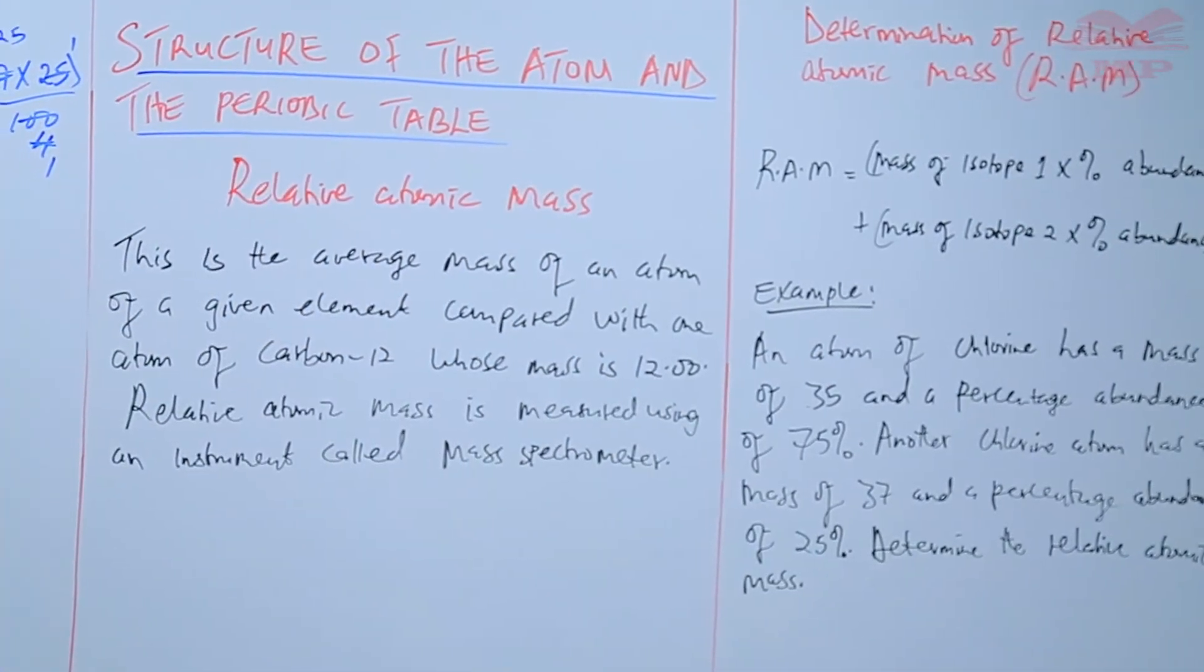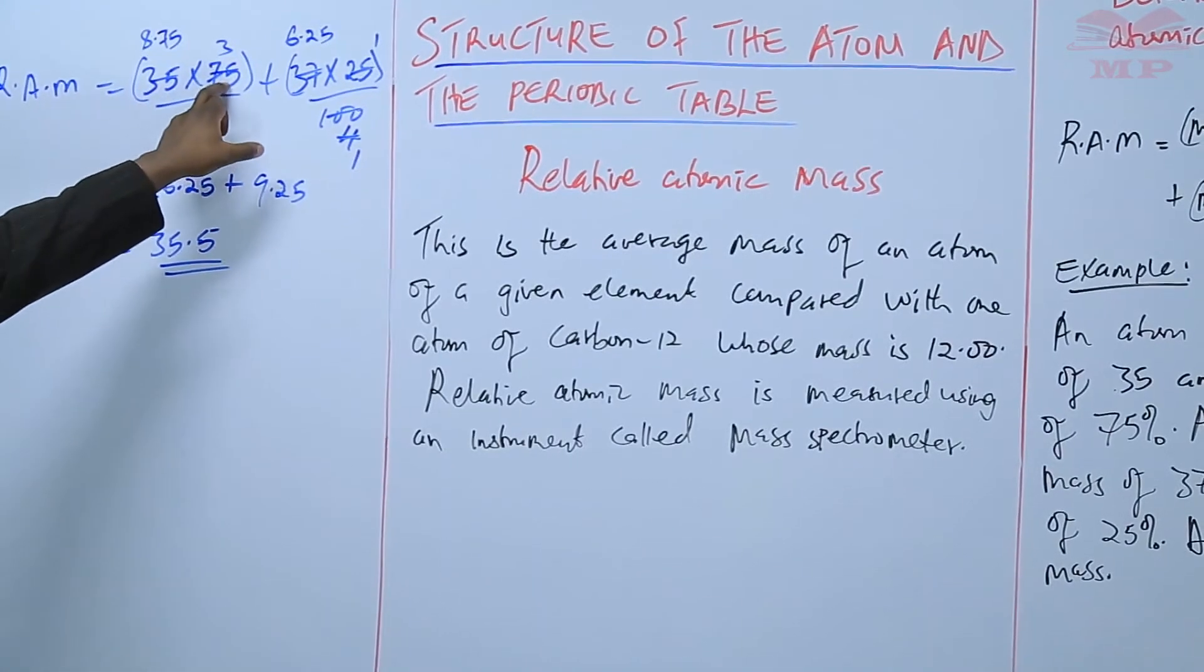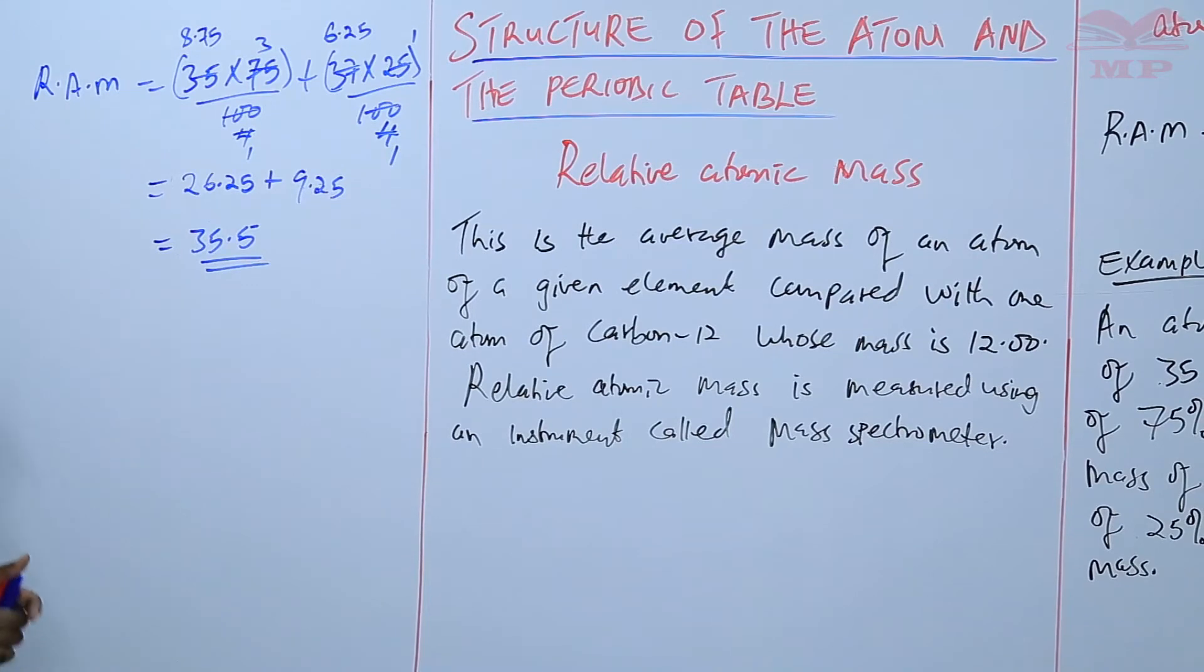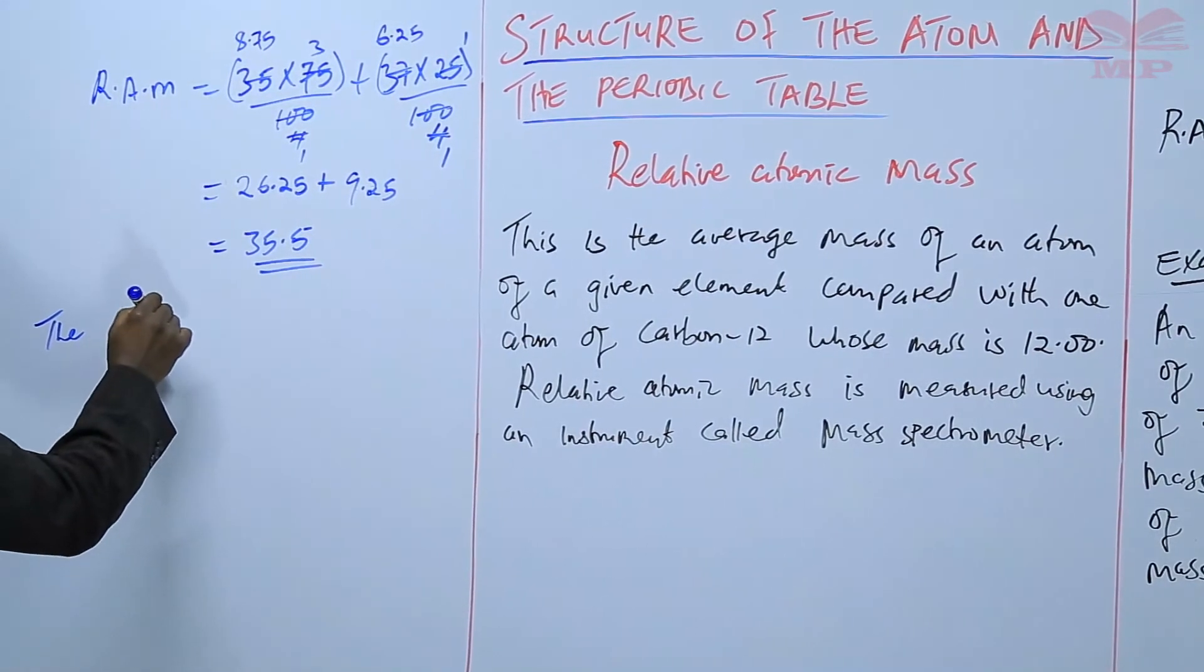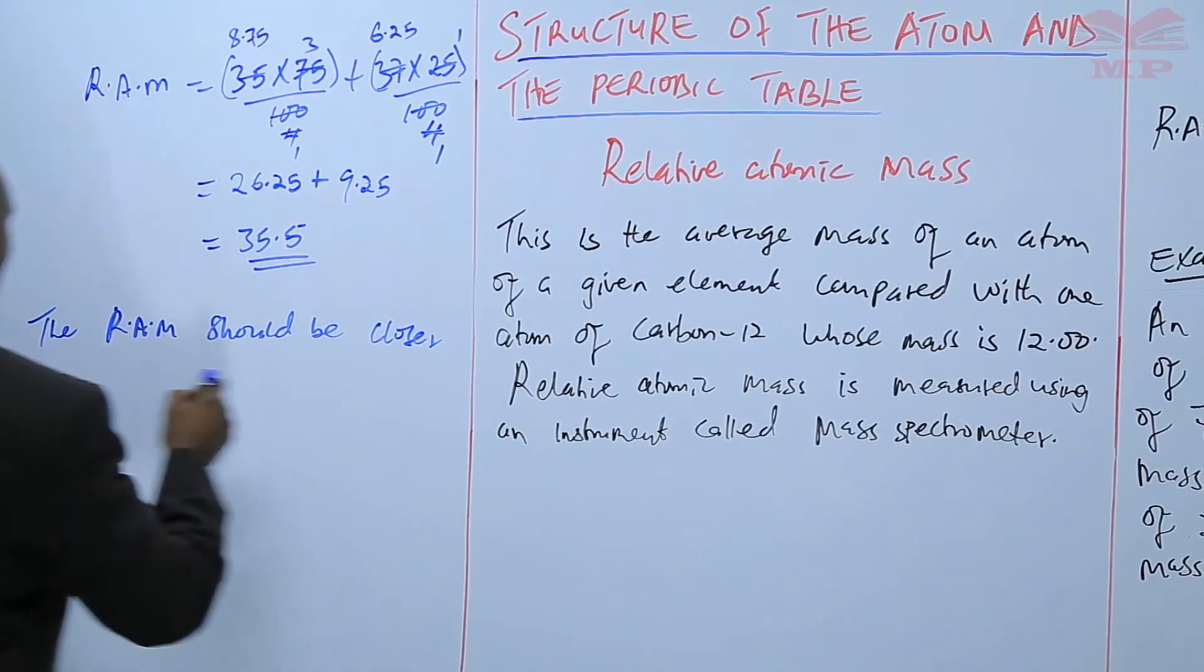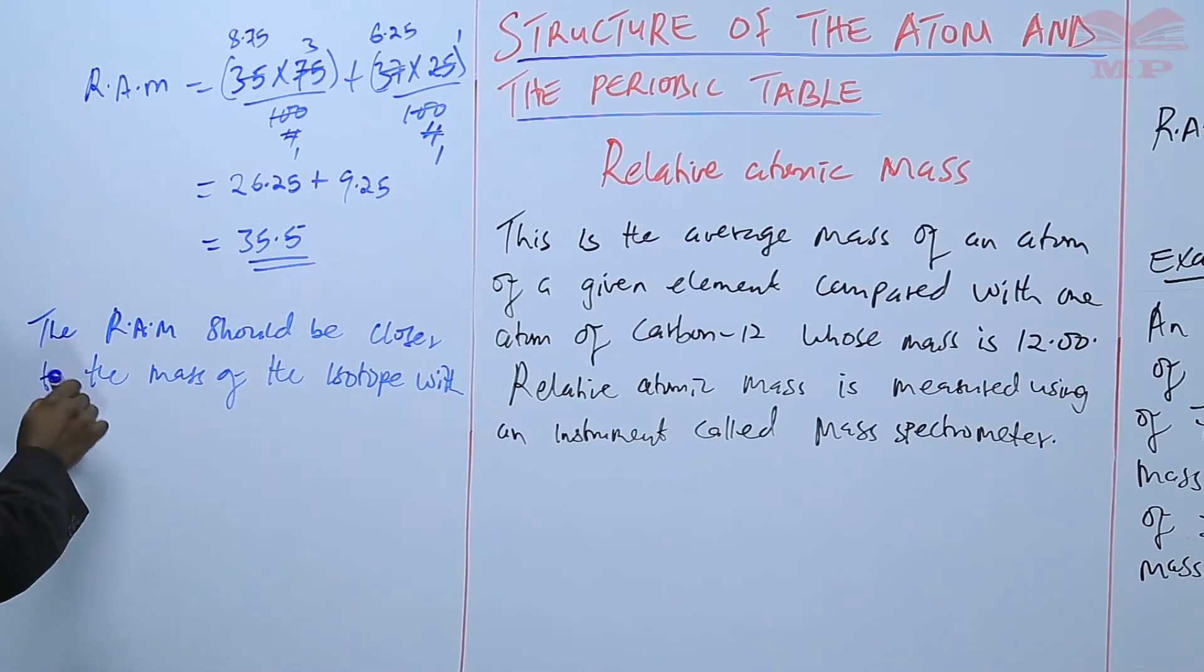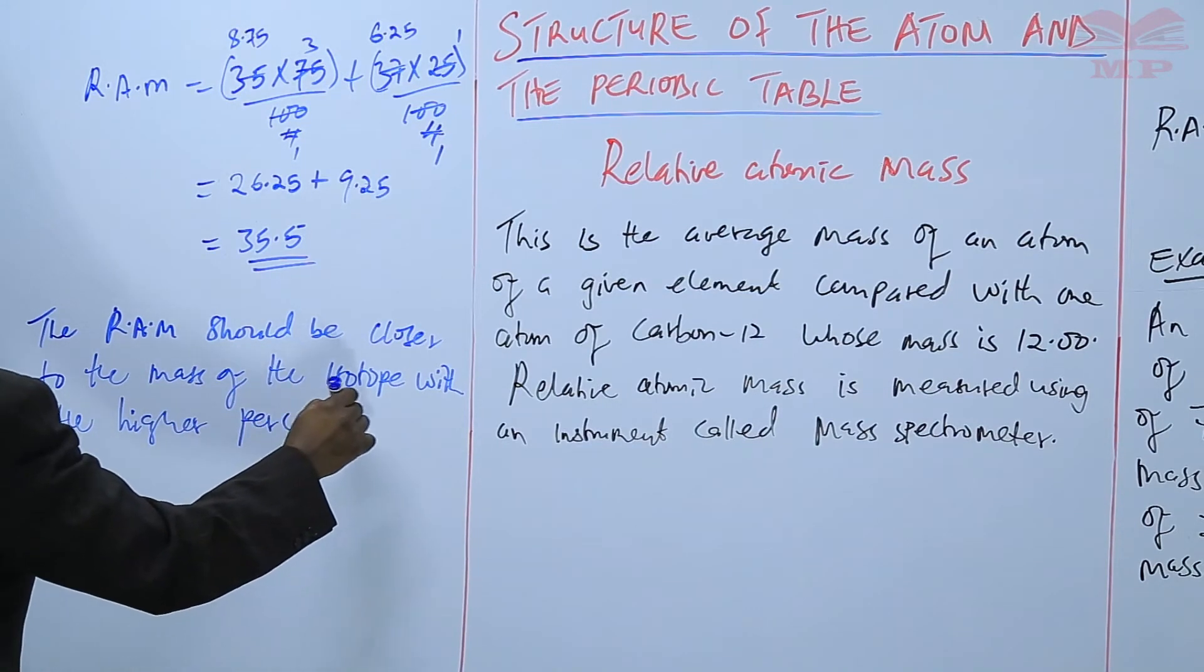Now, the answer that you get should be closer to the mass of the isotope that has the highest percentage abundance. So, in this case the answer of 35.5 is closer to the mass of 35 which has the highest percentage of 75%. So, we can see that the R.A.M. should be closer to the mass of the isotope with the higher percentage abundance.